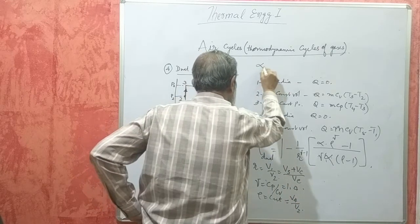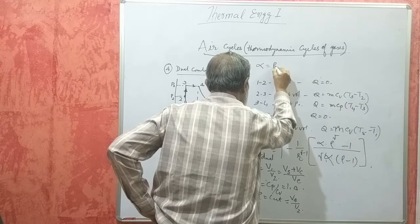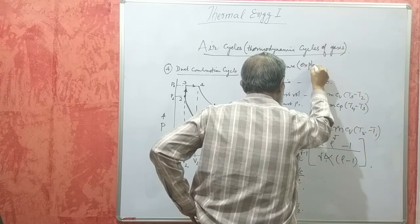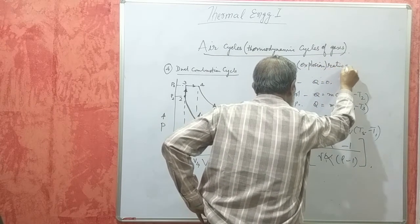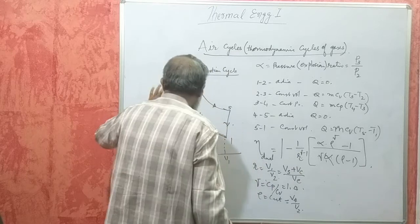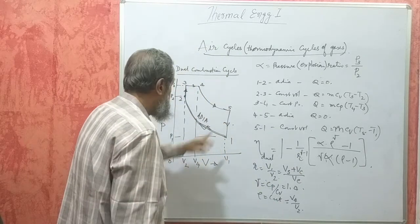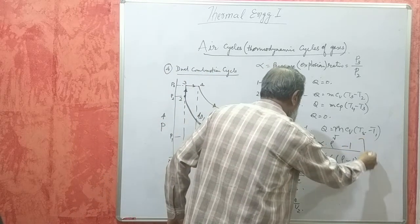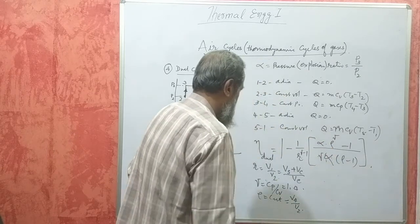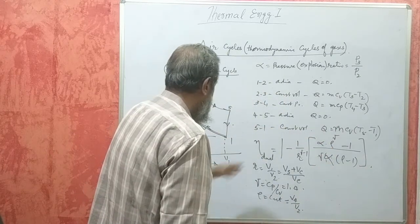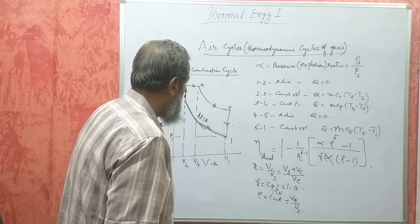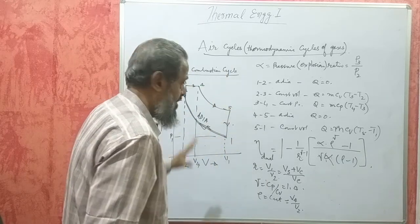Rho is the cutoff ratio, V4 by V2. The new term is alpha, called the pressure ratio or explosion ratio, which is P3 by P2. This formula gives the efficiency of the Dual Combustion cycle. Again, first simplify the whole expression, subtract from 1, and multiply by 100 to get the efficiency in percentage. This is in brief the working of the Dual Combustion cycle.